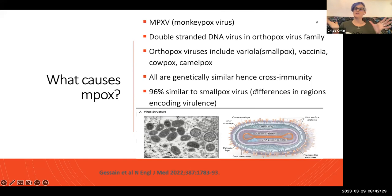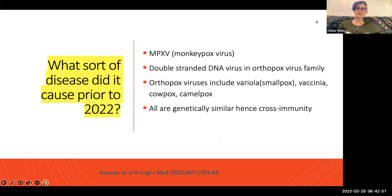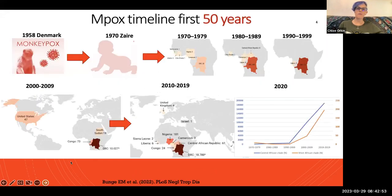Mpox is in the family of viruses such as smallpox and the vaccinia virus made to eliminate smallpox, and other animal-related pox viruses. They're really similar, and that's why you can actually use vaccines from other viruses to immunize against mpox.